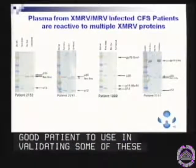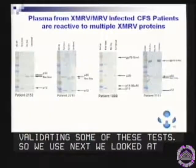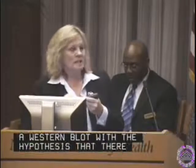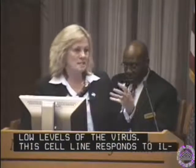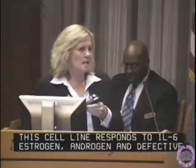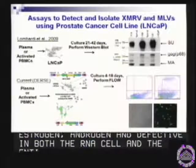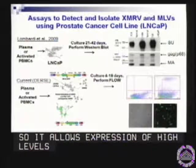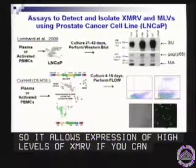Next we looked at transmission because we needed an infectious assay, as it's difficult to detect infectious XMRV in the blood. We had done this assay in the paper where we cultured indicator LNCAP cells with plasma or activated PBMCs for 21 to 42 days, and then performed a Western blot with the hypothesis that there were very low levels of virus. This cell line responds to IL-6, estrogens, and androgen, and is defective in both the RNase L and the entire JAK-STAT type 1 interferon pathway — allowing expression of very high levels of XMRV if it's present, amplifying it below 10 copies.